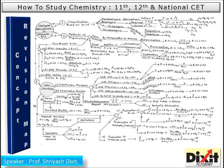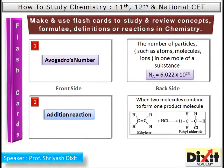The next study tool is the concept revision map. If I ask you: is it possible to cover the whole world in one page? The answer is yes — we can put the whole world on one paper in the form of a map. Similarly, we can cover a whole chapter in one page in the form of a concept revision map. As you are watching on your screen, this is the concept revision map of the topic 'Halogen Derivatives of Alkane' from 12th standard, where I have compiled various concepts and reactions on one page.